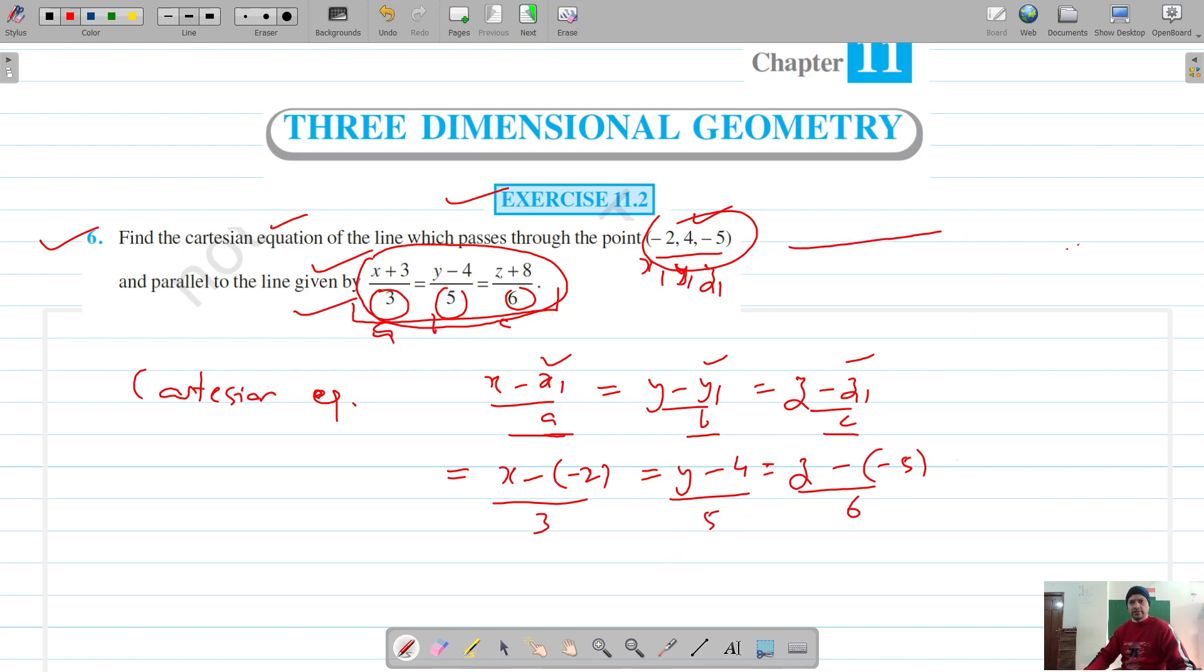This is a line which passes through minus 2, 4 and minus 5. We have to find the equation of this line, and this is parallel to another line. The equation of that line is x plus 3 upon 3 equals y minus 4 by 5 equals z plus 8 by 6.